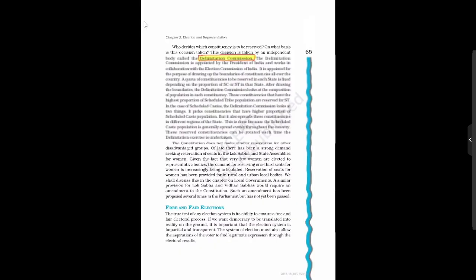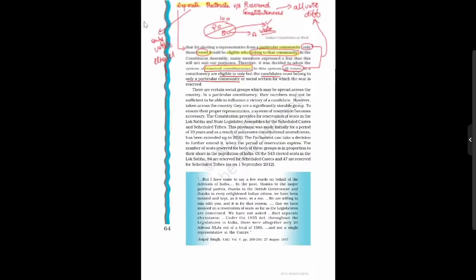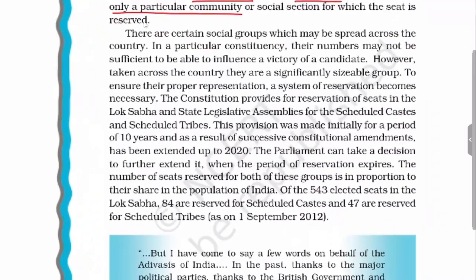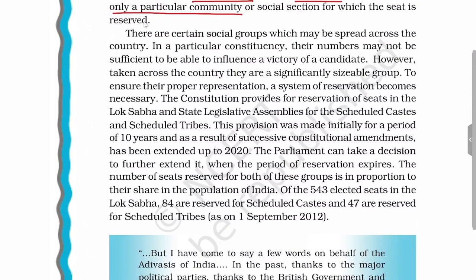In India, certain social groups have been provided reserved seats. The Constitution of India has provided reservation of seats in Lok Sabha and state legislative assemblies to two communities: Scheduled Castes and Scheduled Tribes. This reservation is for 10 years but has been extended up to 2020. Out of 543 elected seats in Lok Sabha, 84 are reserved for Scheduled Castes and 47 for Scheduled Tribes.